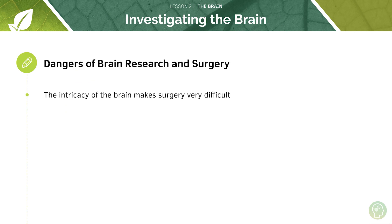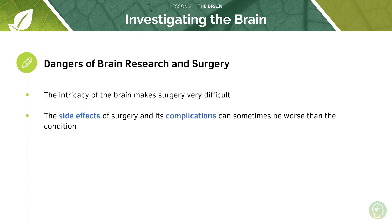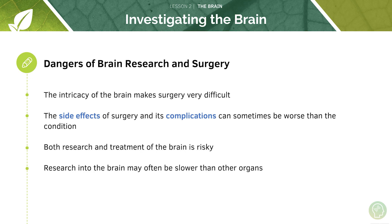Let's look at how we may treat types of brain injury. The intricacy of the brain makes surgery very difficult — there are billions of neurons in the brain, and any wrong move can mess the whole system up. The side effects and complications of surgery can sometimes be a lot worse than the condition itself, so it's often not worth the risk of brain surgery. Both research and treatment of the brain is risky, and this may also slow research into aspects of the brain, because it needs to be done more carefully than research on organs like the liver or kidney.